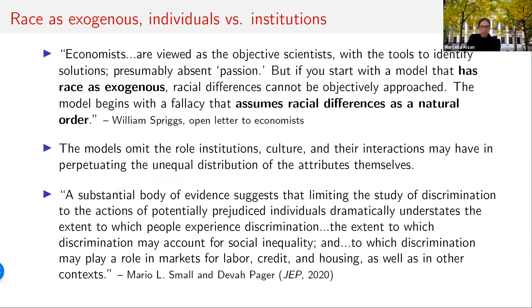A particular concern with models we use is the underlying assumption that race is exogenous. As William Spriggs, professor at Howard University, penned in an open letter to the economics profession following the murder of George Floyd: 'Economists are viewed as the objective scientists, presumably absent passion. But if you start with a model that has race as exogenous, racial differences cannot be objectively approached. The model begins with a fallacy that assumes racial differences as a natural order.' In addition, the standard models generally omit the role institutions, culture, and their interactions may have in giving rise to the unequal distribution of attributes themselves.